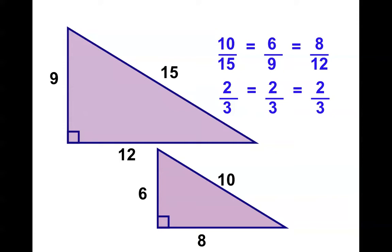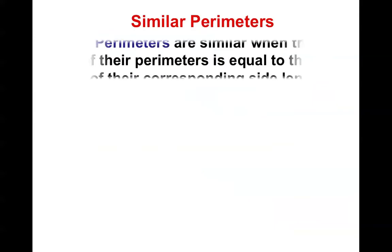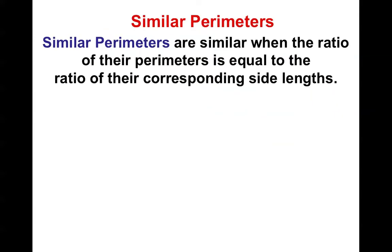So how are we going to use this with perimeter? Well, let's think about it. If you have a similar perimeter, they say it's similar when the ratio of the perimeters is equal to the ratio of the corresponding side lengths. If you realize that ratio means fraction, you say that when the fraction of the perimeters is equal to the fraction of the corresponding side lengths. Let's see what happens.